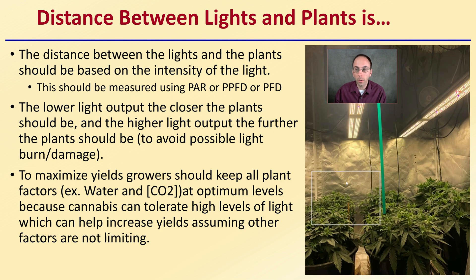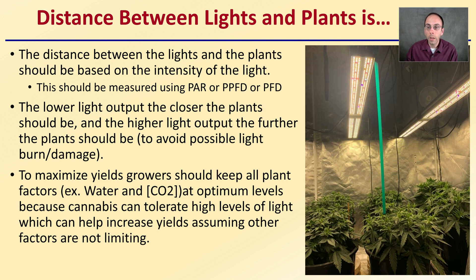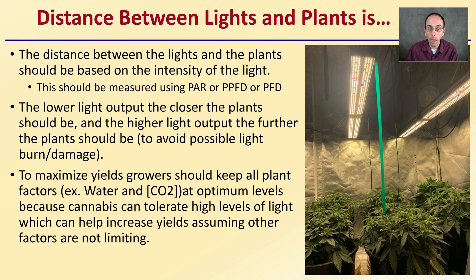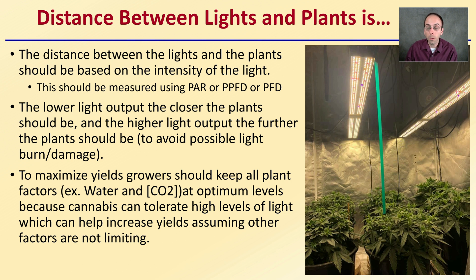The distance between lights and plants should be based on the intensity of the light, measured using a PAR, PPFD, or PFD meter. The lower the light output, the closer the plants should be; the higher the light output, the further the plant should be, simply to avoid the chance of leaf burn or damage. To maximize yields, growers should keep all plant factors — such as water, concentration of carbon dioxide, and nutrients — at optimum levels, because cannabis can tolerate high levels of light, which can help increase yields assuming no other factors are limiting.